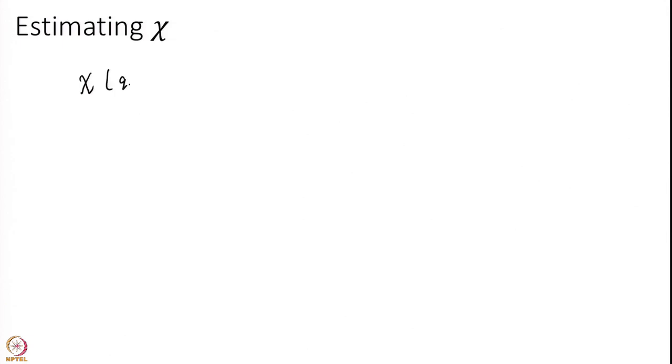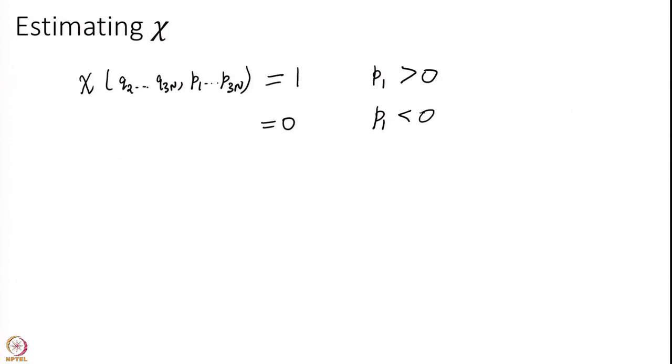The next question is how to estimate chi, and that is a very hard question. We are going to make a very simple assumption that will help clarify what transition state theory really is. We assume chi is a factor depending on q2 to q3N and p1 to p3N: it equals 1 if p1 is greater than or equal to 0, and equals 0 if p1 is less than 0.